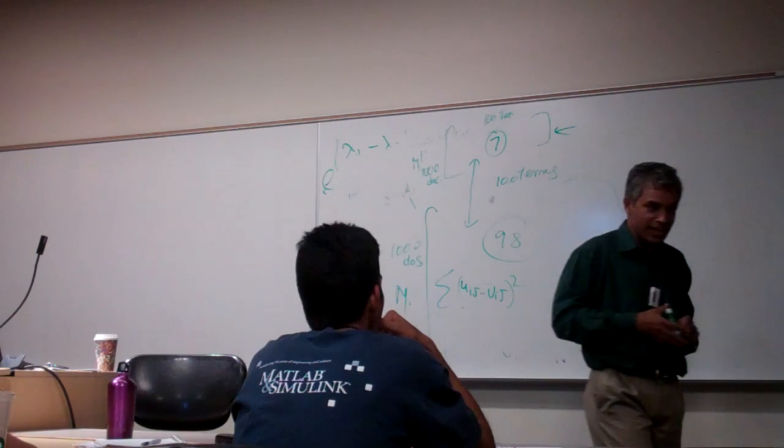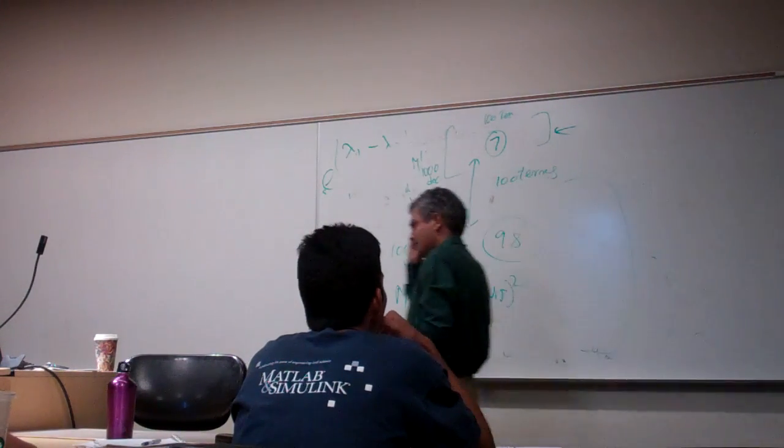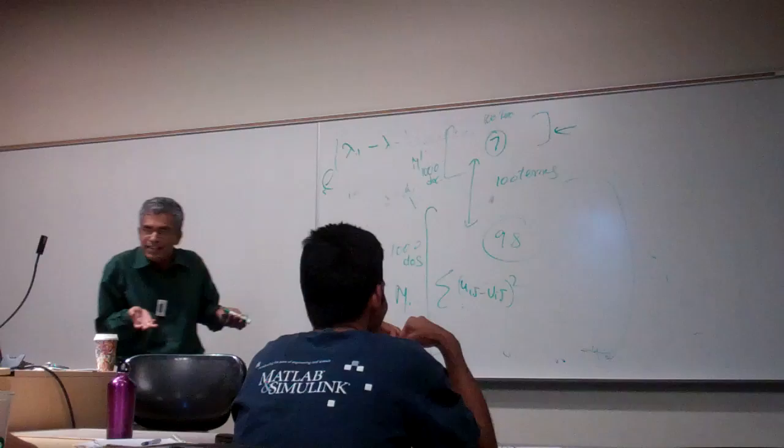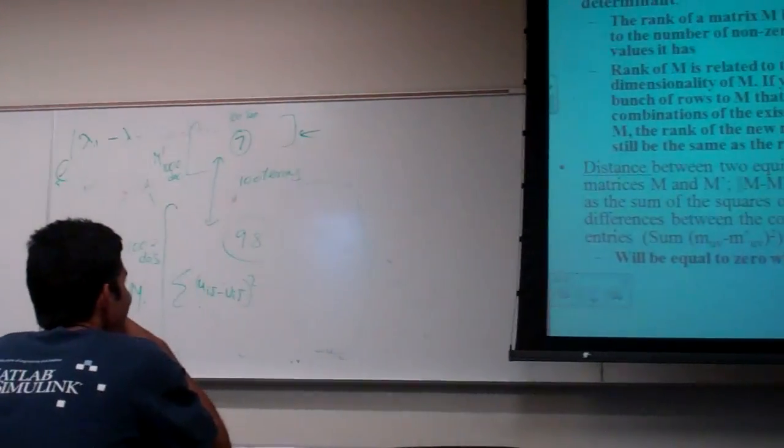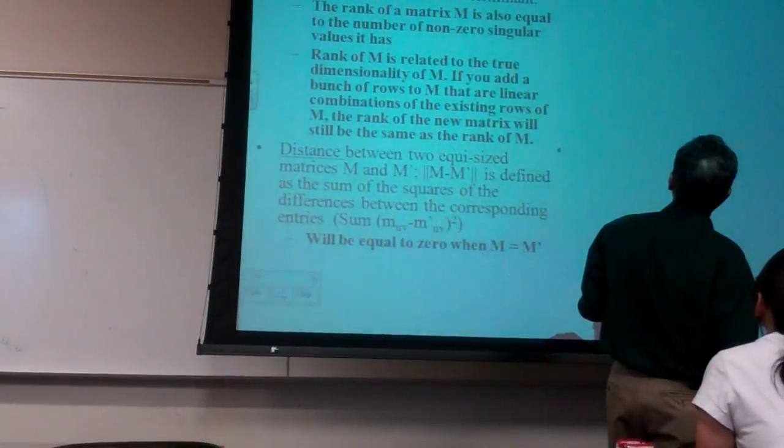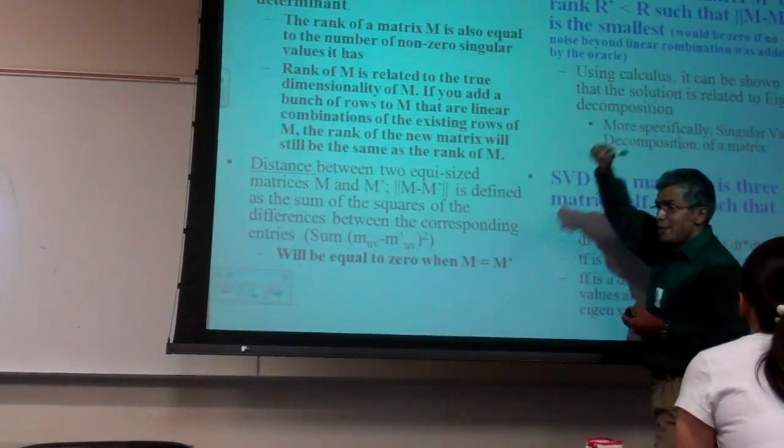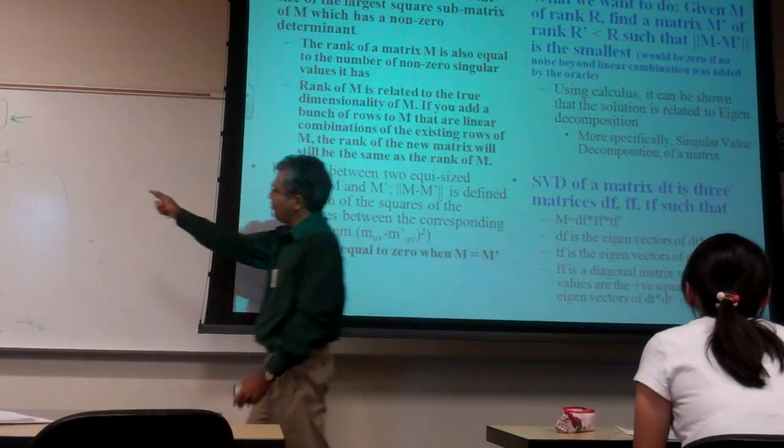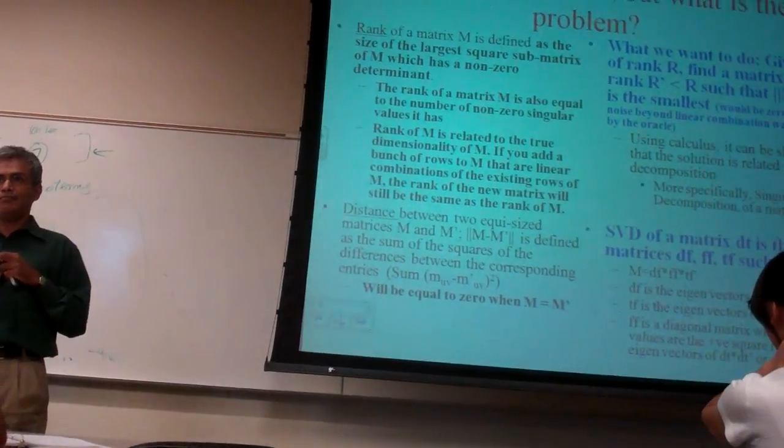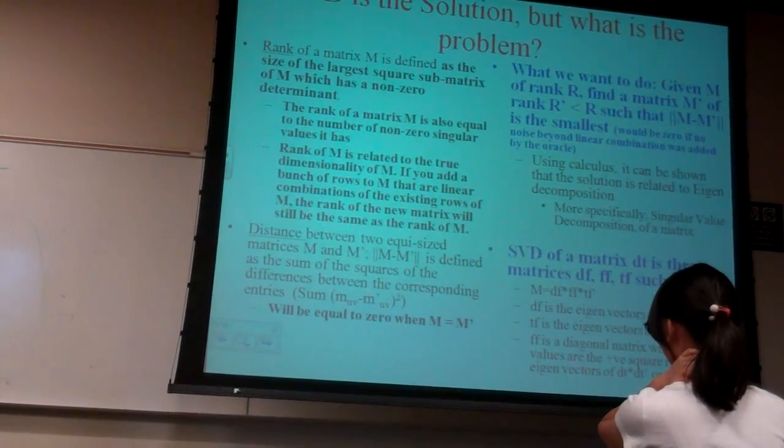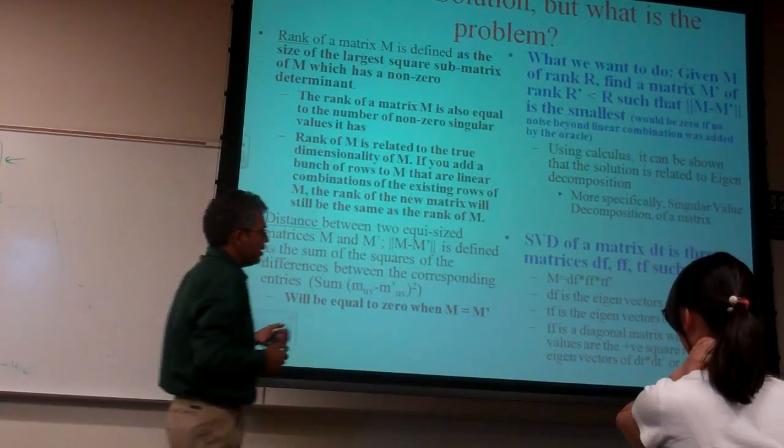This is a beautiful optimization problem. You have infinite number of matrices of rank 7. Among those, I want the matrix that is the closest to this. And this is where, remember the whole point of calculus is to find optimization, right? And this basically, if you were to use a calculus of variations, turns out that the optimum is connected. The optimum solution for this problem is connected to singular value decomposition.